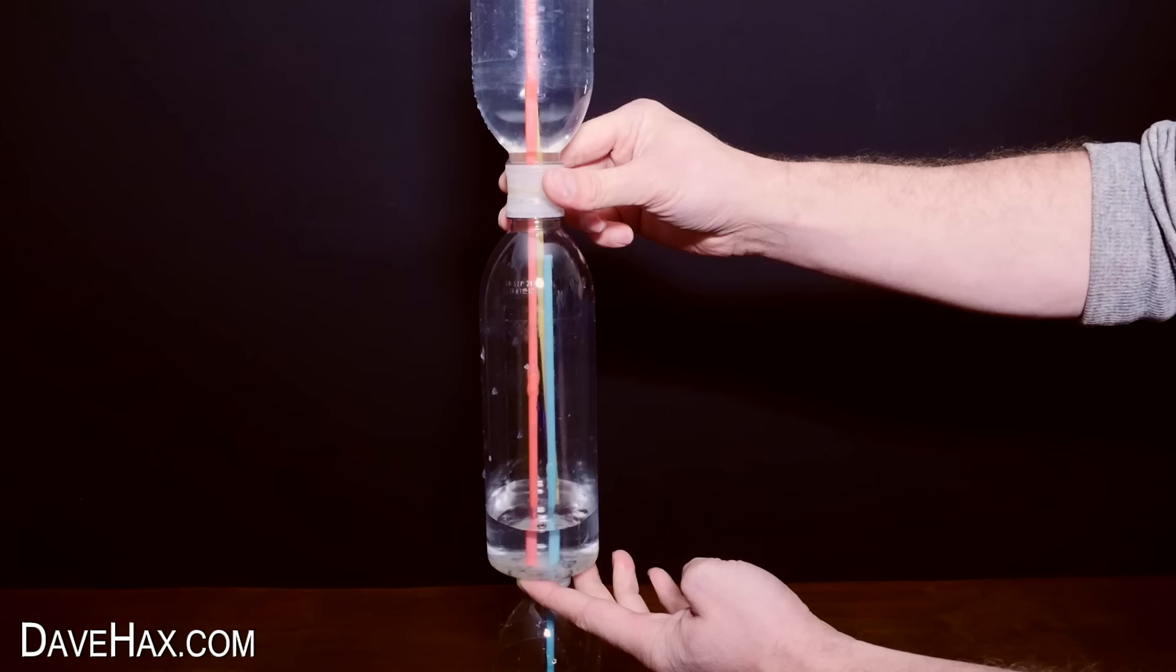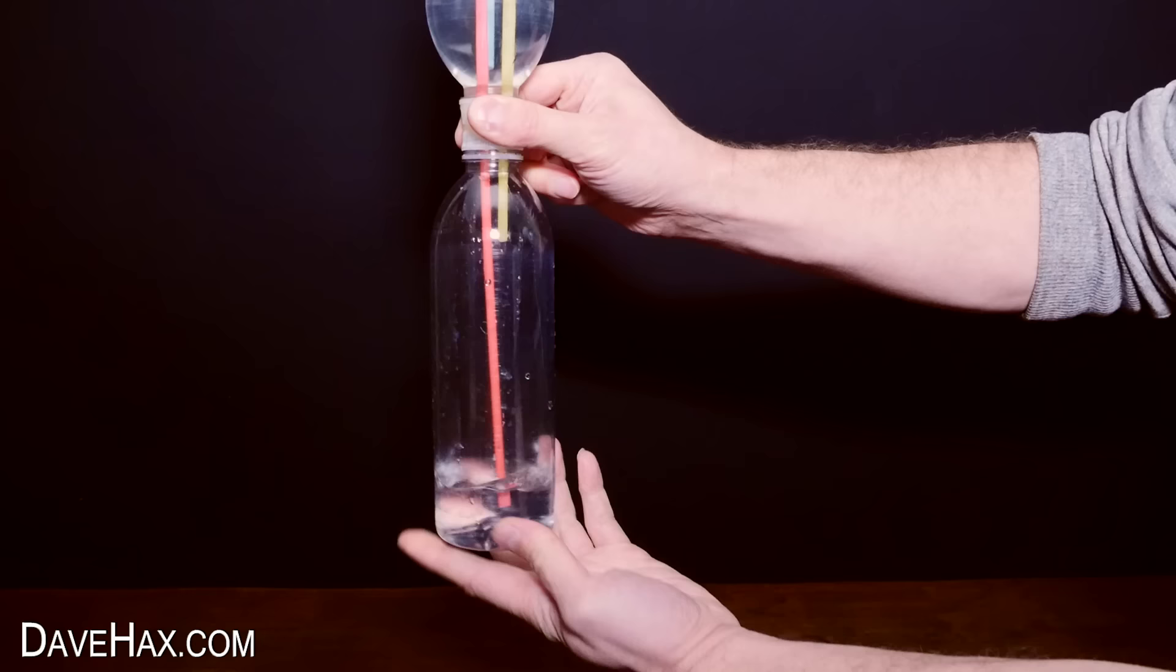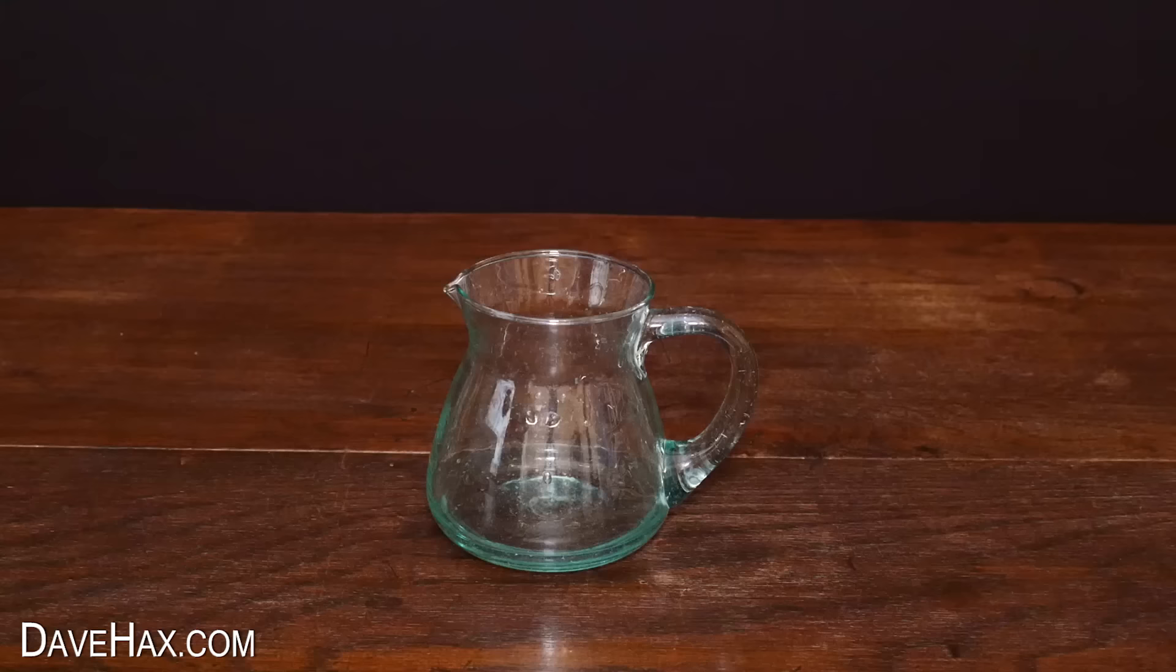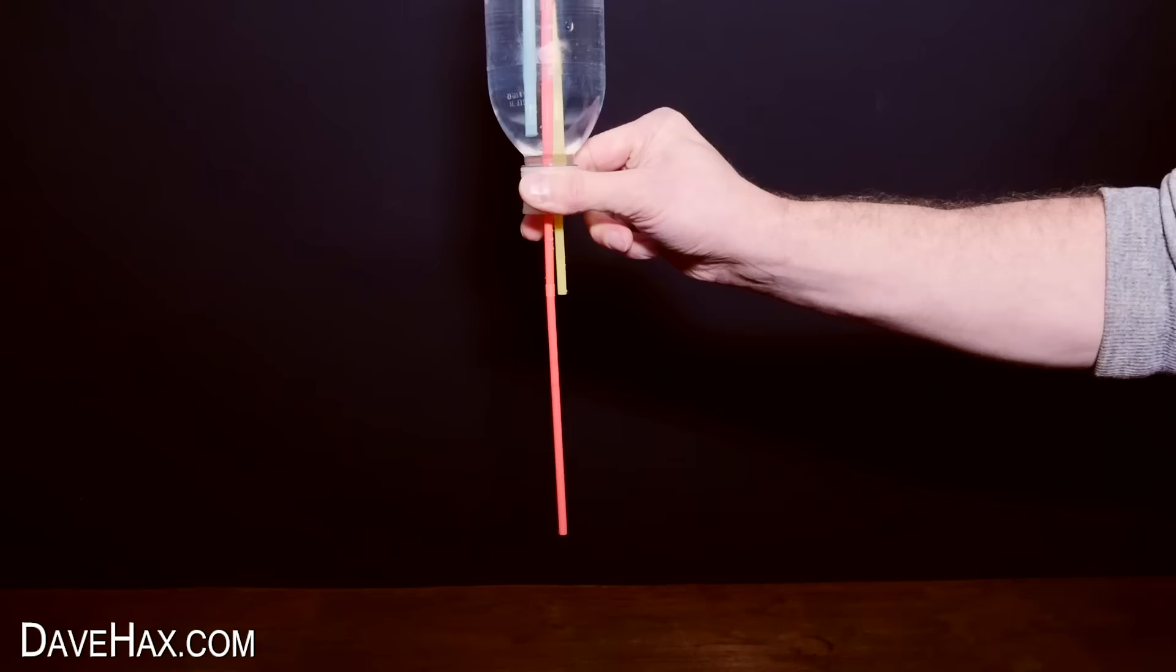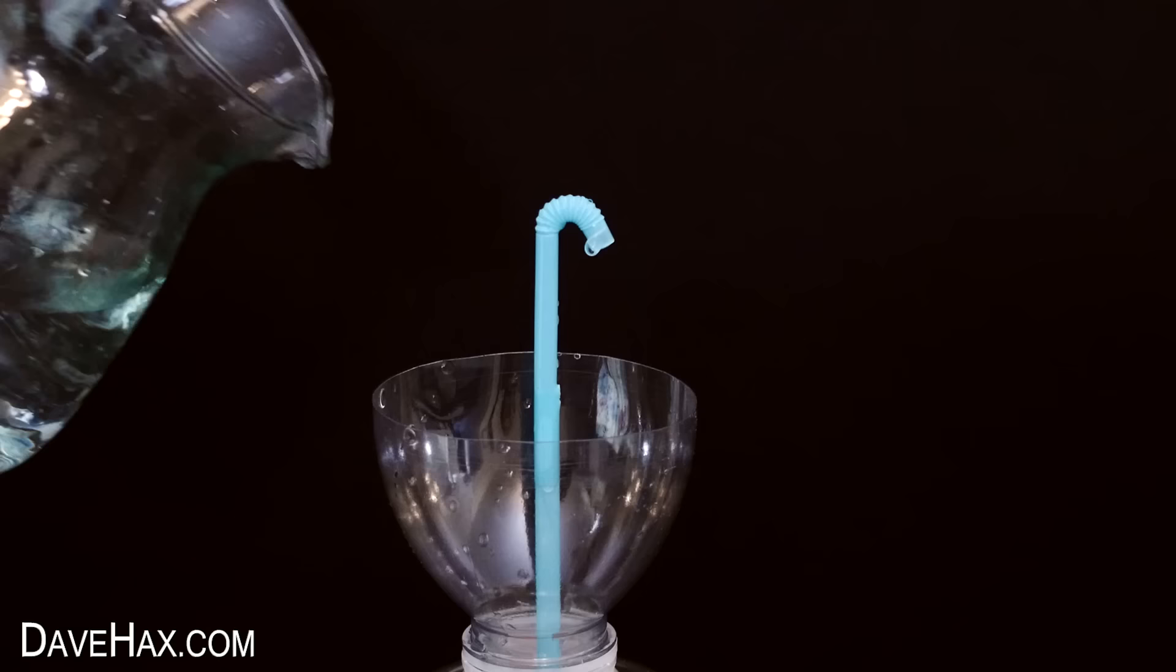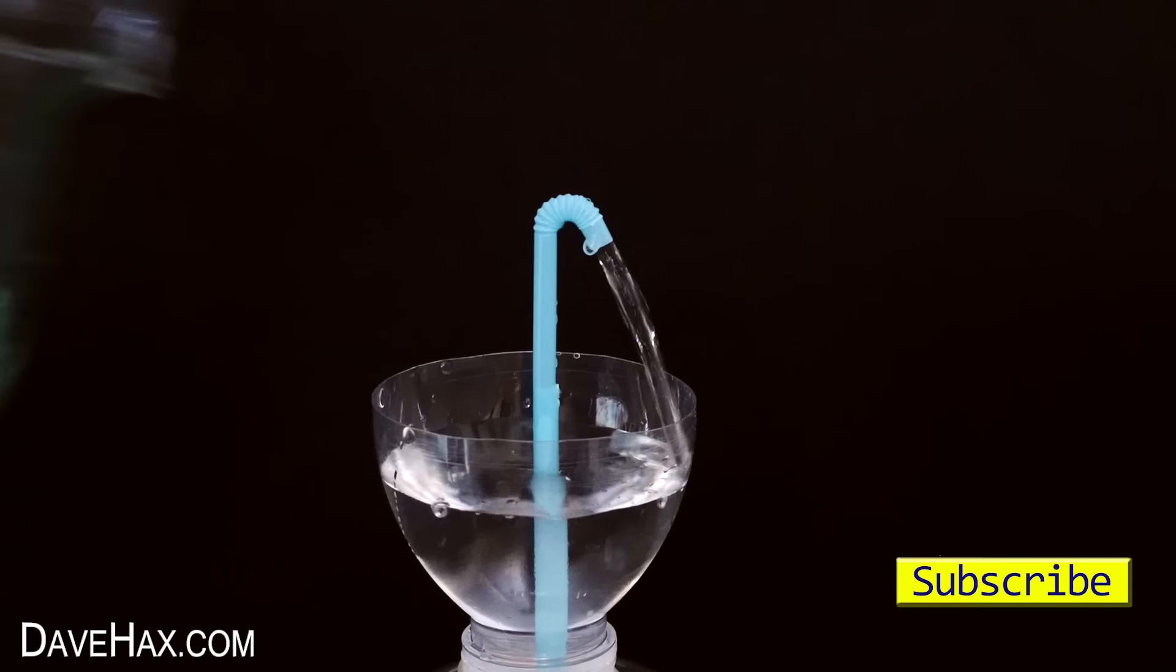To reset it, we can turn it all upside down to refill the middle bottle, then remove the bottom bottle, pour the water back into our jug and restart the fountain.